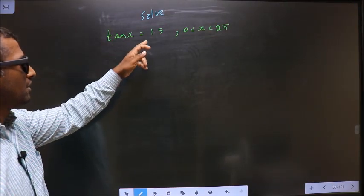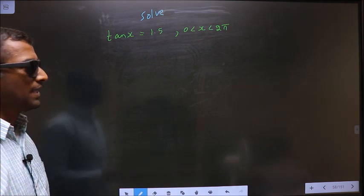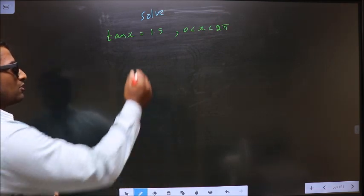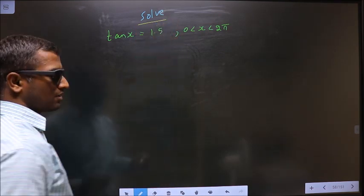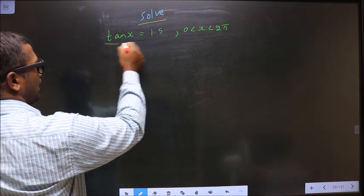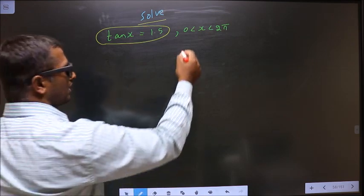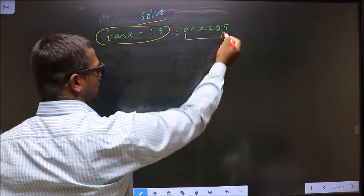Solve tan x equals 1.5 where x lies between 0 to 2π. They told you to solve, so you should get the values for x satisfying this equation and it should lie in this interval 0 to 2π.